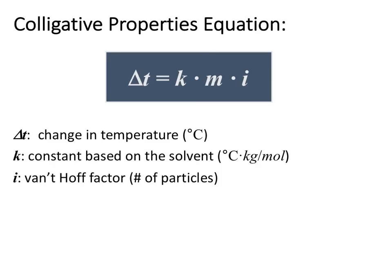This brings us to our calculations. The change in temperature associated with freezing point depression or boiling point elevation is represented by the equation ΔT = KMi. Delta T is the change in temperature, K is a constant, M is your molality, and i is your van't Hoff factor, which indicates the number of particles. This constant will be provided to you, and it will be different depending on whether you're dealing with boiling point elevation or freezing point depression.